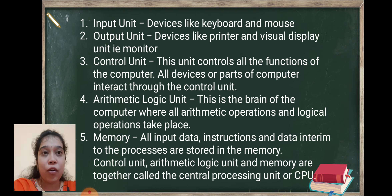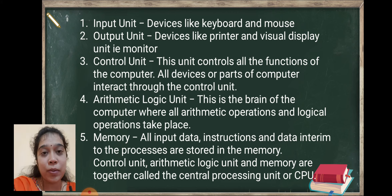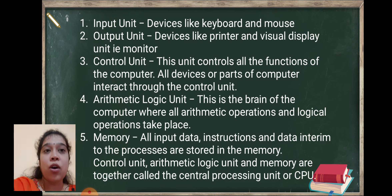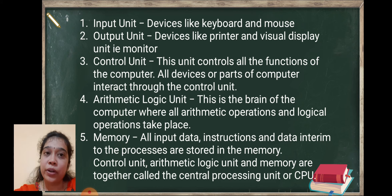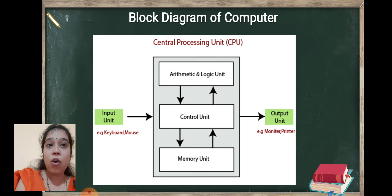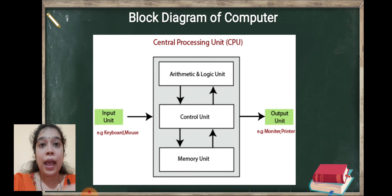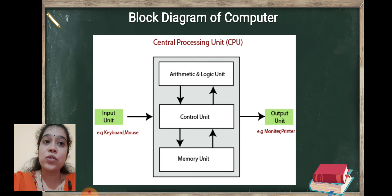First is input unit — devices like keyboard and mouse are called the input unit. Second — devices like printer and visual display unit, that is the monitor, are called the output unit. Control unit controls all functions of the computer; all devices and parts of the computer interact through the control unit. Since the control unit is present in the center, all devices are controlled by it and all devices interact with each other by using the control unit.